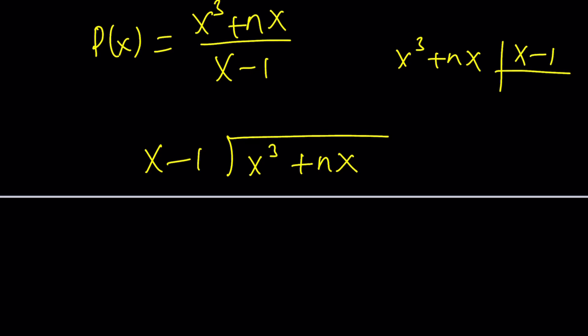Now, x goes into x cubed, x squared times, and we're going to distribute x cubed minus x squared. And then in order to subtract, we need to negate and add. That's going to give us x squared plus nx.